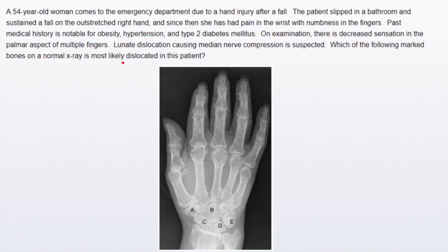The question is essentially asking you: which of the marked bones on a normal X-ray is most likely dislocated in this patient? In other words, which of these bones is the lunate bone?